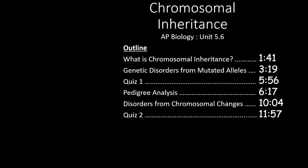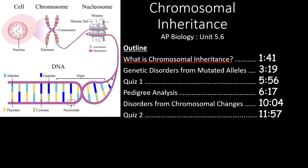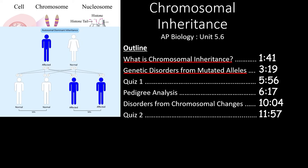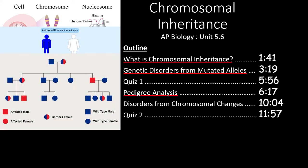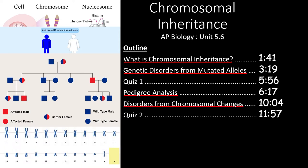In this video, we'll cover section 5.6 of the AP Biology Curriculum. We'll start by defining chromosomal inheritance before we see how genetic disorders can arise from mutated alleles. After the first quiz, we'll see how researchers can use pedigrees to analyze the pattern of inheritance of a trait in a family tree. Finally, we'll see how chromosomal changes caused by things like non-disjunction can lead to other types of genetic disorders.